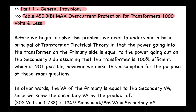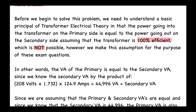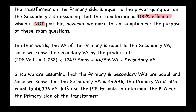Before solving this problem, we need to understand a basic principle of transformer electrical theory: the power going into the transformer on the primary side is equal to the power going out on the secondary side, assuming 100% efficiency. This is not actually possible, but we make this assumption for exam purposes. The VA of the primary equals the secondary VA. Since we know the secondary VA — 208 volts times 1.732 for three-phase times 124.9 amps — that gives us 44,996 VA.